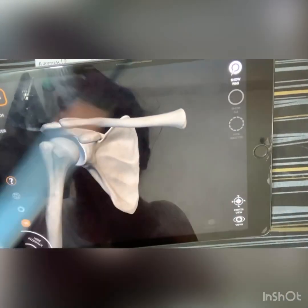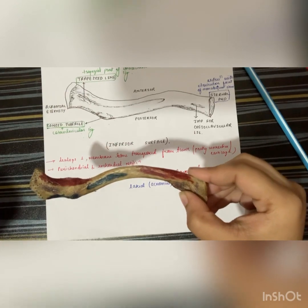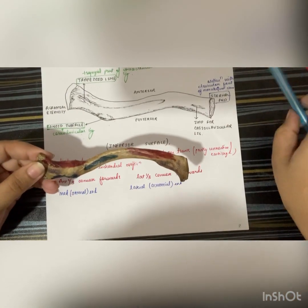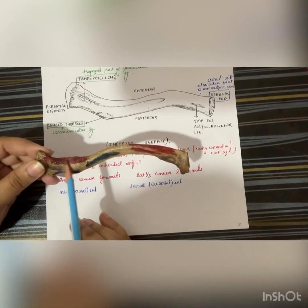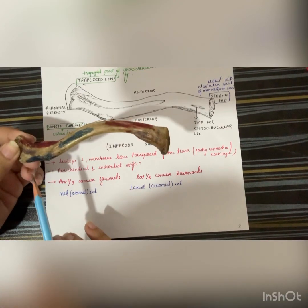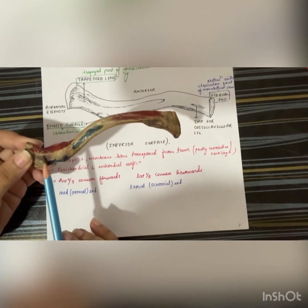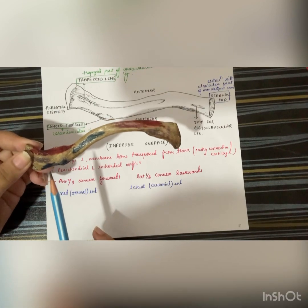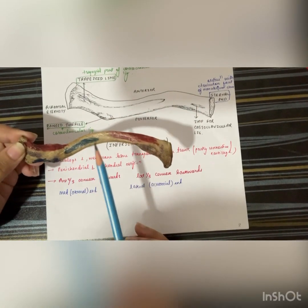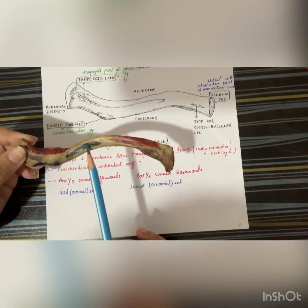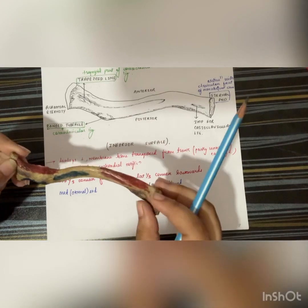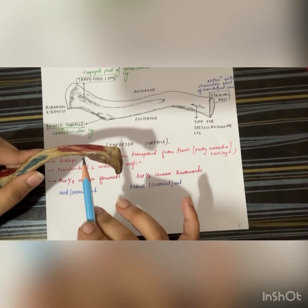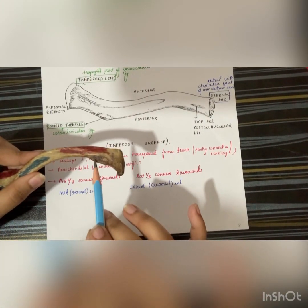Coming to the attachment of the muscles: here this one is the deltoid, this one is the trapezius, over here is the attachment for the coracoclavicular ligament, here is attached the clavipectoral fascia, then this one is the pectoralis major, and here is attached the costoclavicular ligament.